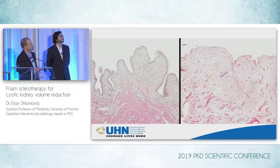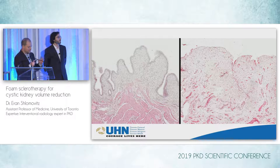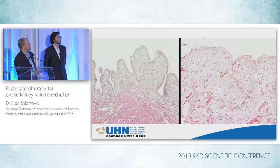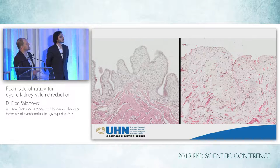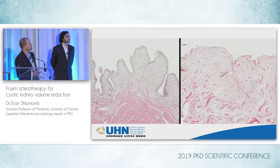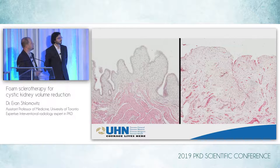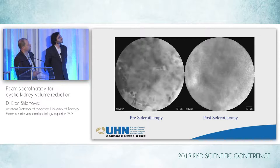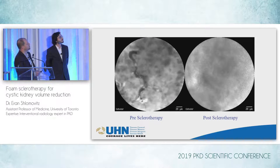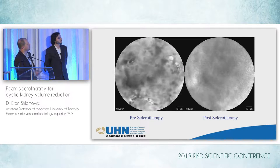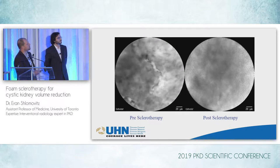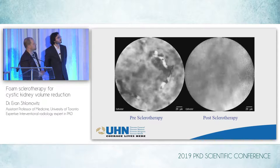When you inject the foam in patients, it comes immediately into contact with the entire wall. There's not much destruction beyond the epithelial layer — just a little bit of venous congestion in some superficial veins near the area. This is laser endomicroscopy in the same pig bladder: pre-sclerotherapy, you see very superficial capillary blood flow, and post-sclerotherapy, basically everything is destroyed superficially.